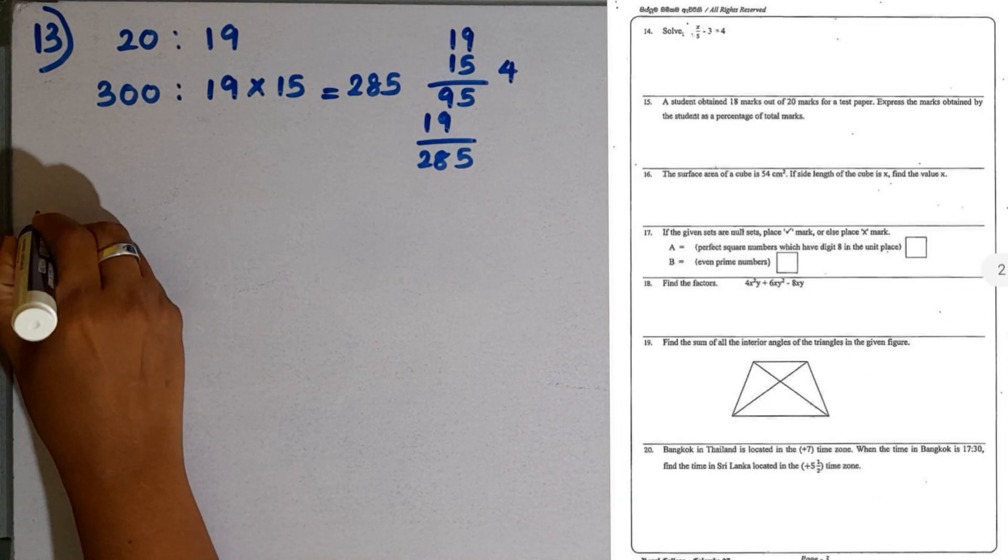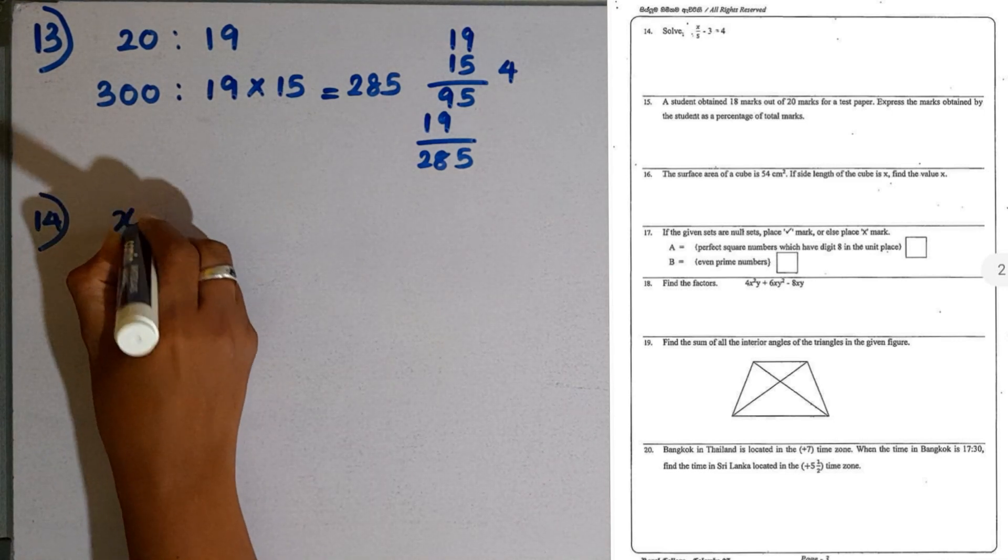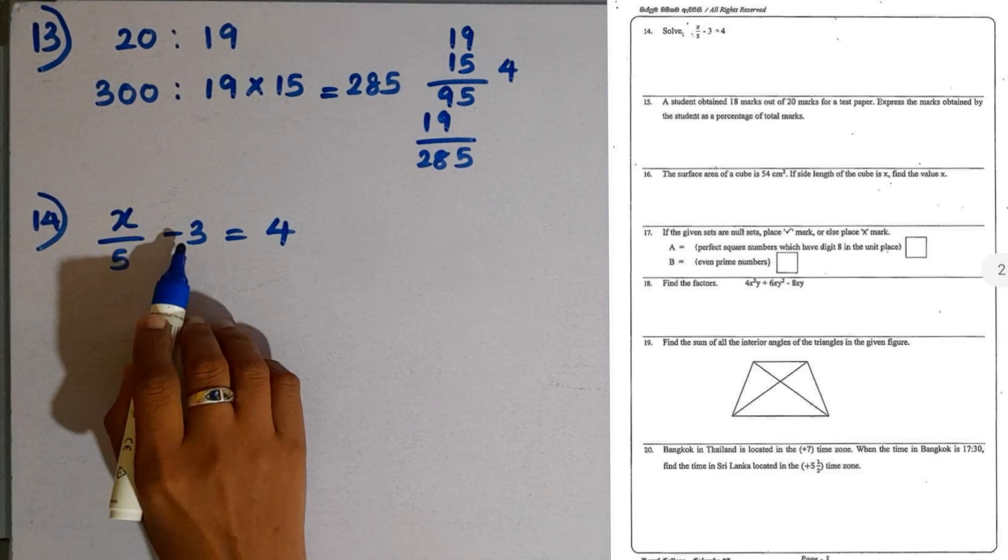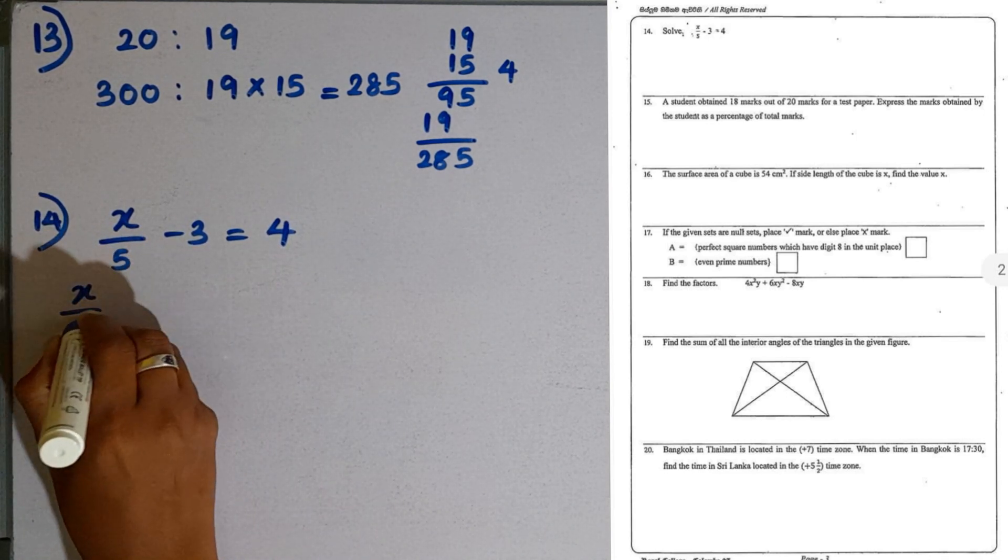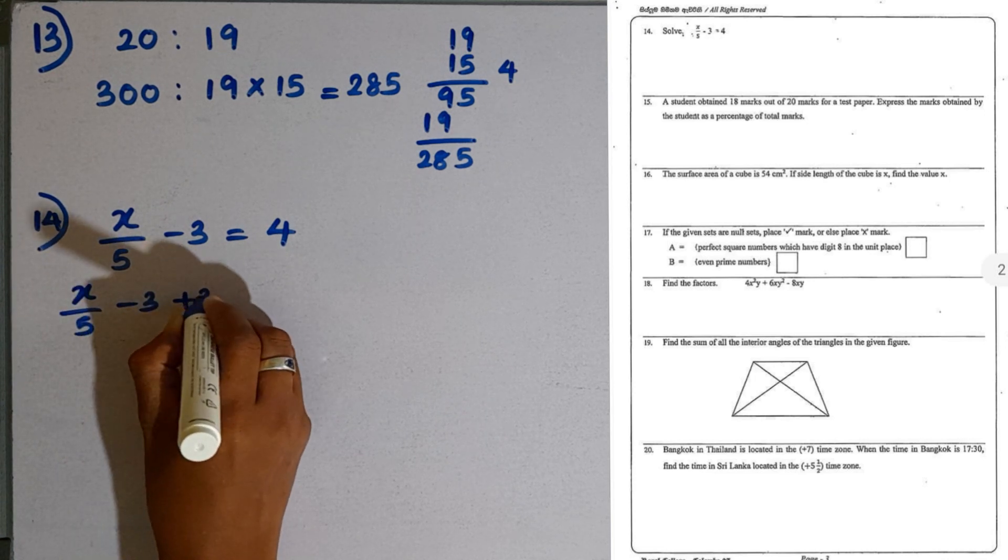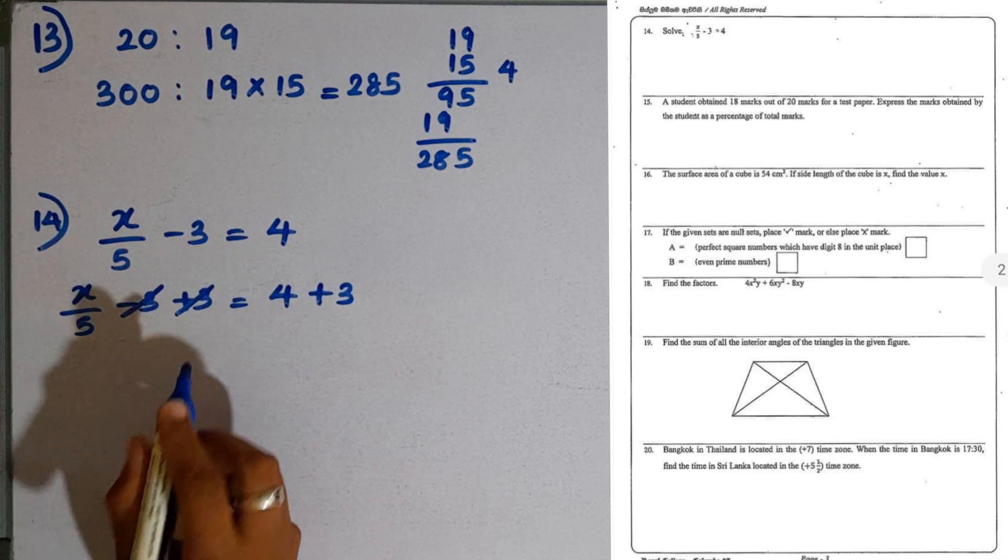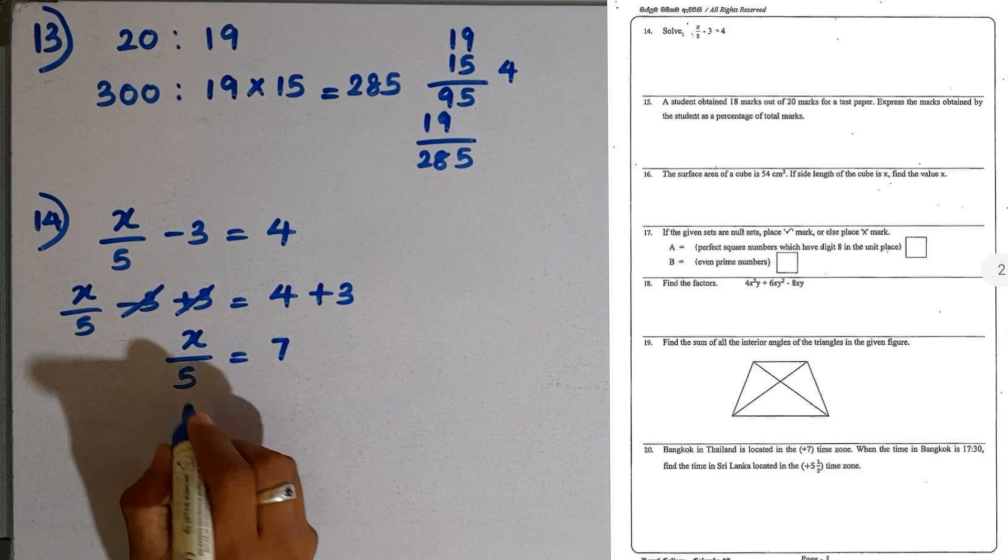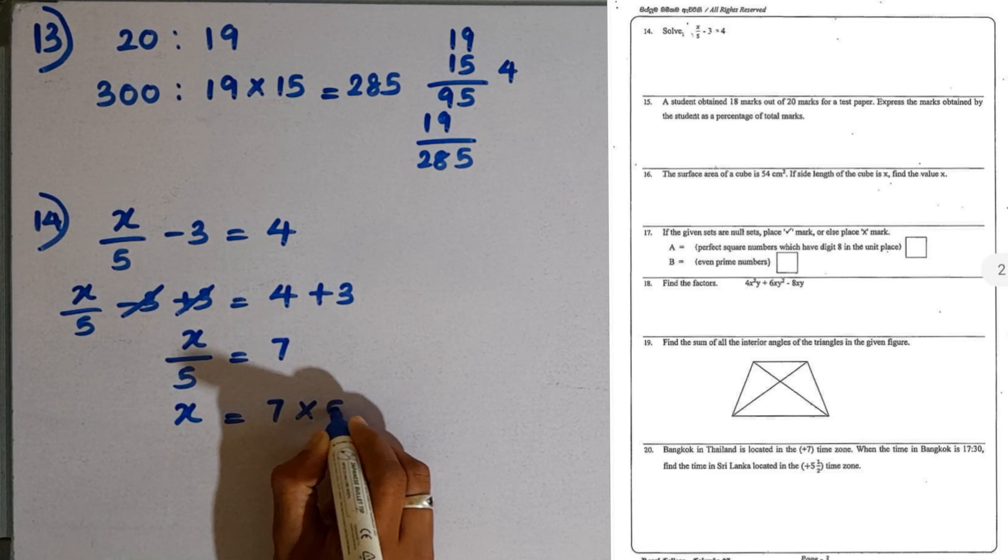Question number 14. Solve the equation X over 5 minus 3 equal to 4. The first step is to add 3 to both sides. X over 5 minus 3 plus 3 equals 4 plus 3. Minus 3 and plus 3 cancel. X over 5 equals 7. Both sides should be multiplied by 5. X equals 7 multiplied by 5, which is 35.